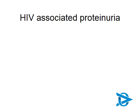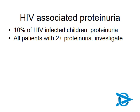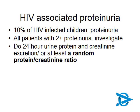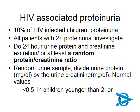Let's look at HIV-associated proteinuria in HIV-infected children. Ten percent of HIV-infected children will present with proteinuria at some point. It's very important that all patients with two-plus proteinuria need to be investigated. We can do a 24-hour urine protein and creatinine excretion, but that's usually not practical. What should be possible is a random protein-creatinine ratio — take a random urine sample and divide the urine protein by the urine creatinine. Normal values: in children under two, less than 0.5; in children over two, less than 0.2.